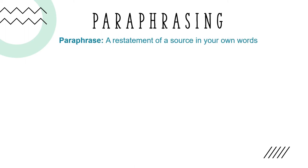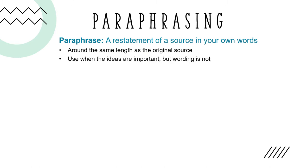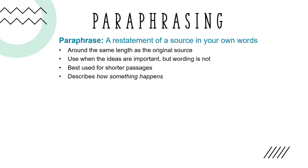A paraphrase is a restatement of a source in your own words. Whereas summaries tend to be much shorter than the original source, paraphrases are often around the same length as the original source. You can use paraphrasing when the ideas of the source are important but the original wording of the source is not. Typically, a paraphrase is best used for shorter passages and describes how something happens.